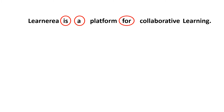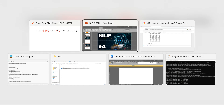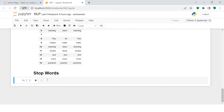These highlighted words are referred to as stop words. Python has a whole list of stop words for each language. Here we are dealing with English, so we will look at the list of English stop words and how to remove them in Python. Let's jump to the Jupyter notebook.